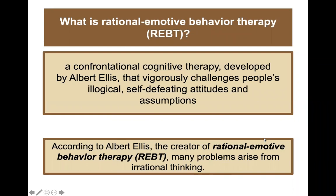Rational emotive behavior therapy, or REBT, is a confrontational type of cognitive therapy developed by Albert Ellis that vigorously challenges people's illogical, self-defeating attitudes and assumptions. According to Ellis, many problems arise from irrational thinking. The father of cognitive therapy more broadly is often considered Aaron Beck, while REBT is specifically attributed to Albert Ellis.